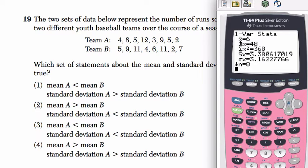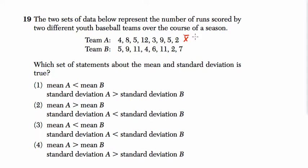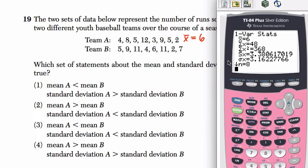X bar is our mean. So the mean for team A is 6. I'm going to write this down. Mean is 6. And standard deviation, there's two standard deviations right here. They're really close to each other. The SX is a sample deviation. Sample deviation is if you only have a small sample of your set, if you don't have all the data.